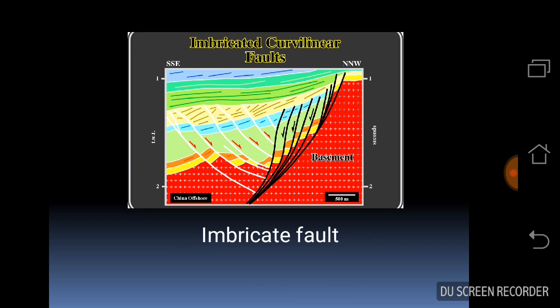The second one is imbricate fault. These are closely spaced parallel faults of the same type. They either terminate against or merge with a detachment fault. Normal faults in a hanging wall block may form a set of imbricate faults.